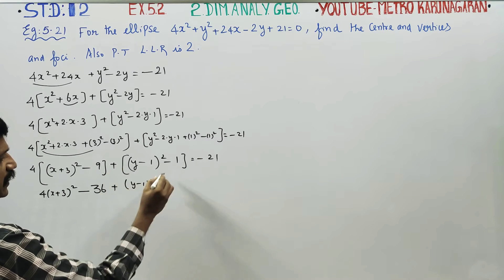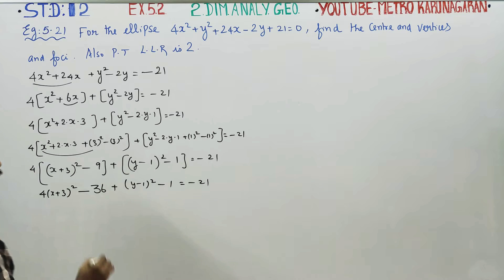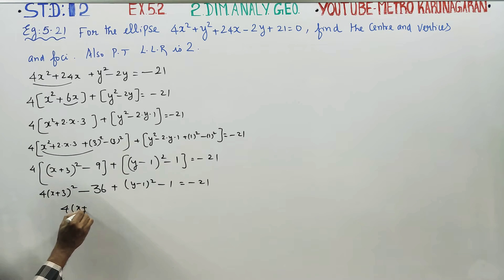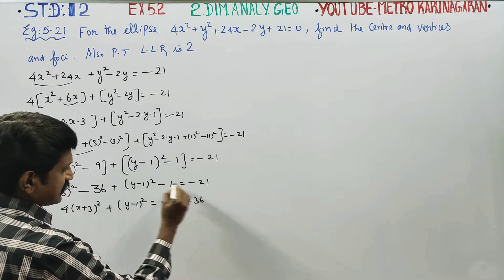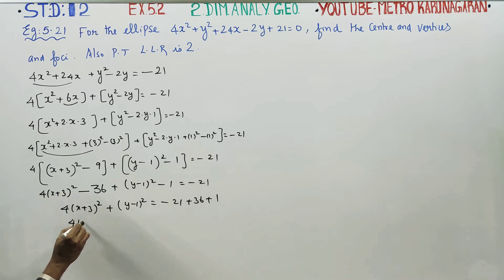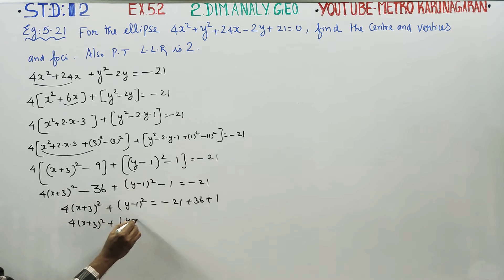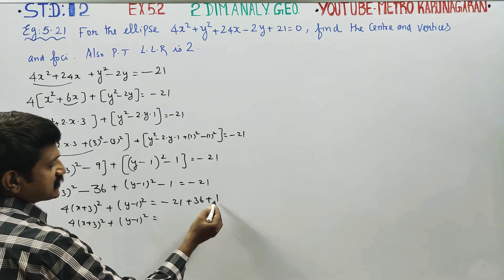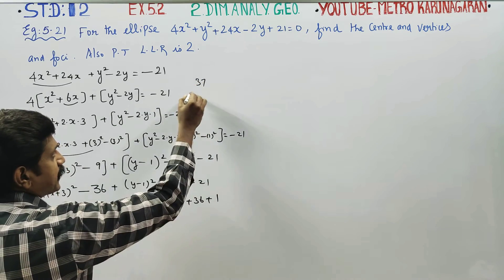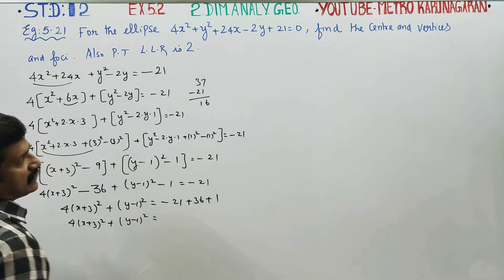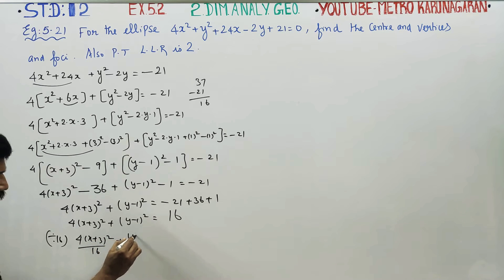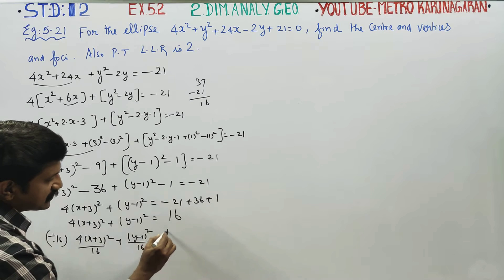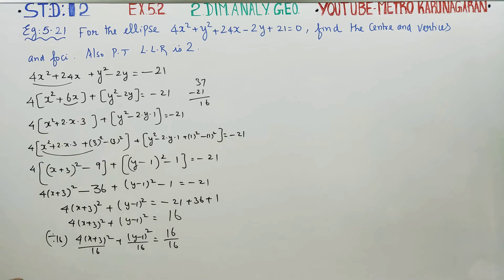So we have 4(x + 3)² - 36 + (y - 1)² - 1 = -21. Rearranging: 4(x + 3)² + (y - 1)² = -21 + 36 + 1 = 16. Dividing all terms by 16: (x + 3)²/4 + (y - 1)²/16 = 1. This is now the standard form.